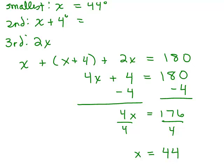So this is 44 degrees. This is 4 degrees more, so that will be 44 plus 4 which is 48 degrees. And the third angle is 2x. Remember, x is 44, so 2 times 44 is 88 degrees.